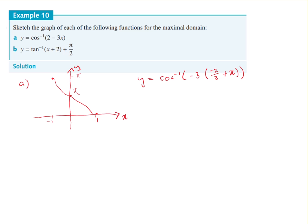So now what I can see is, so what do the various bits do? So the 3 is a dilation by a factor of a third, dilation by a factor one third from the y axis.